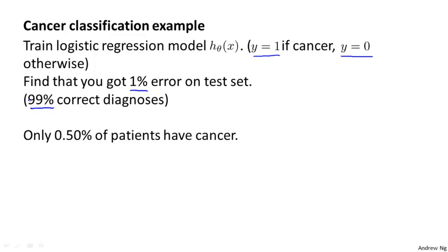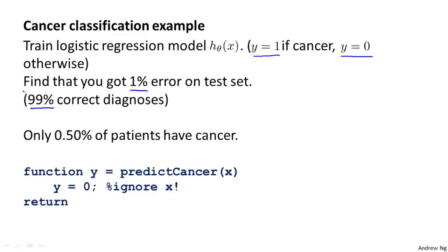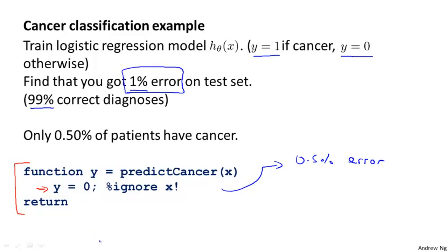But now let's say we find out that only 0.5% of patients in our training and test sets actually have cancer — only half a percent of patients coming through our screening process have cancer. In this case, the 1% error no longer looks so impressive. Here's a piece of non-learning code that takes the input features x, ignores it, and just says y equals 0 — always predicting nobody has cancer. This algorithm would actually get 0.5% error, which is even better than the 1% error, and it's just predicting y equals 0 all the time.